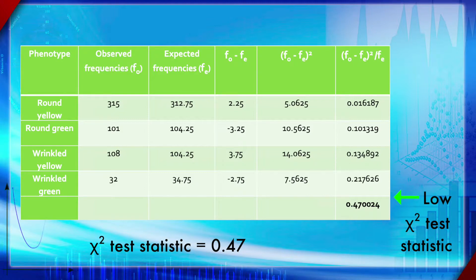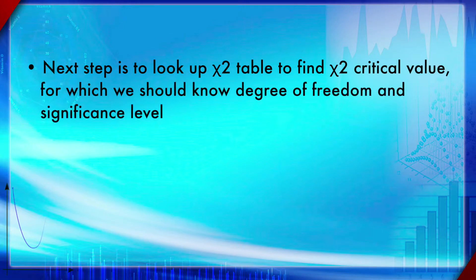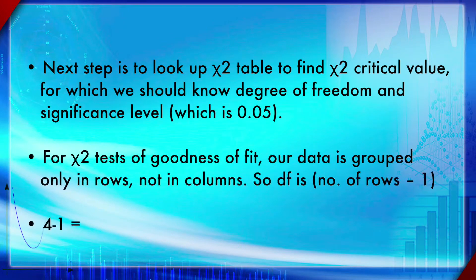A rough guide: a low chi-square statistic means a high p-value, and a high chi-square statistic means a low p-value — they are inversely related. Let us now look up the value 0.47 in the chi-square table to find the critical value, for which we need the degrees of freedom and the significance level.